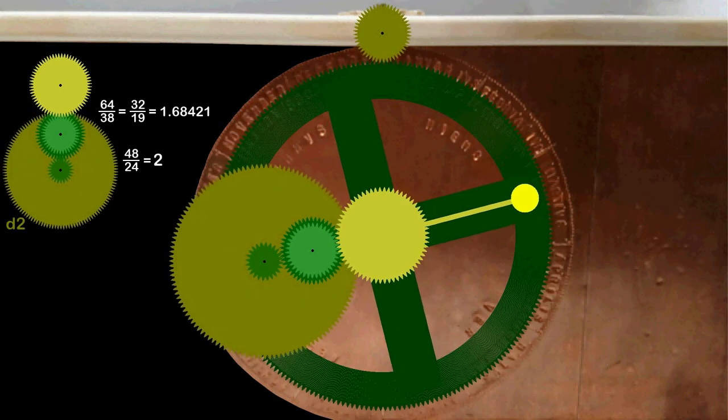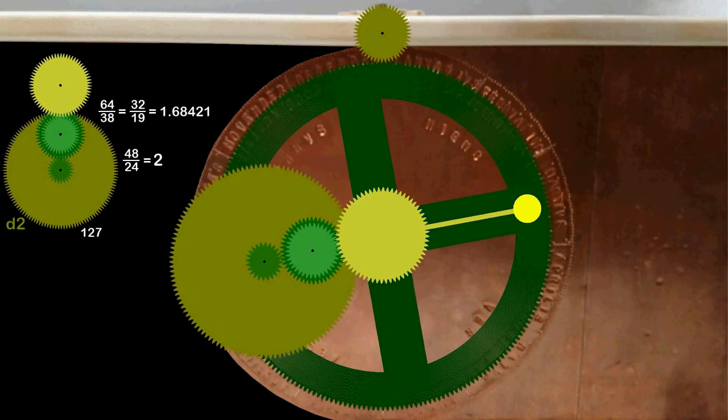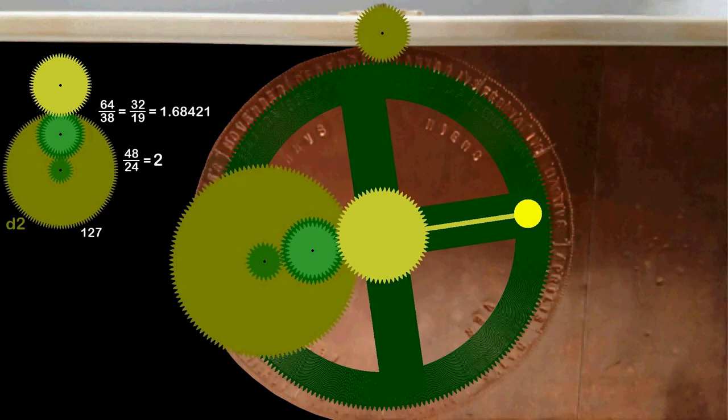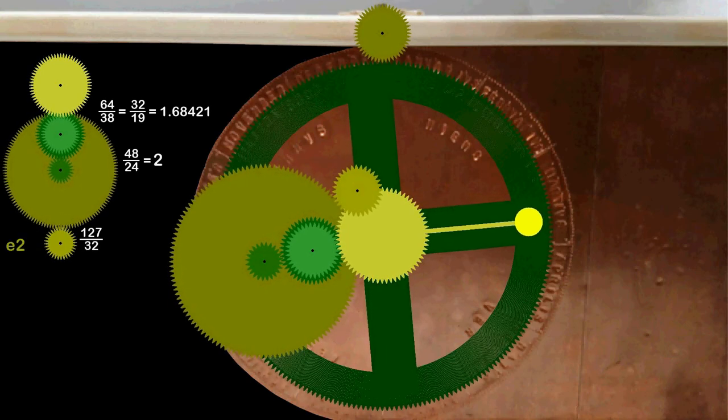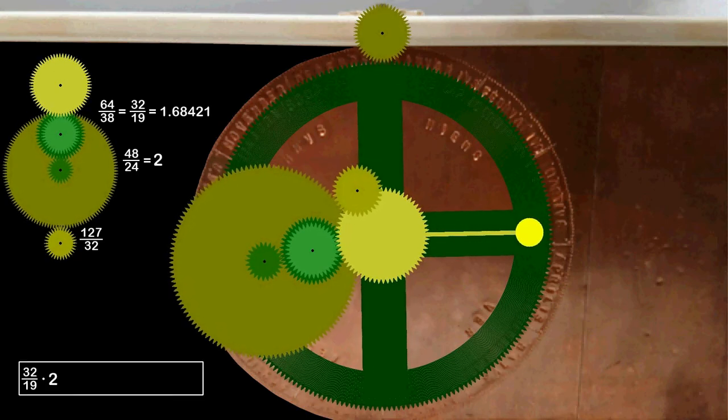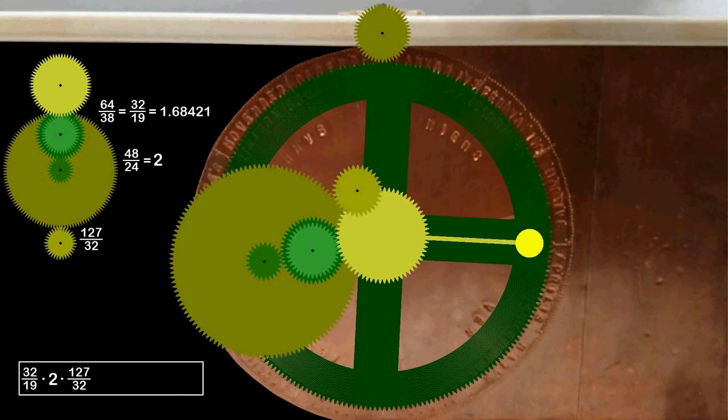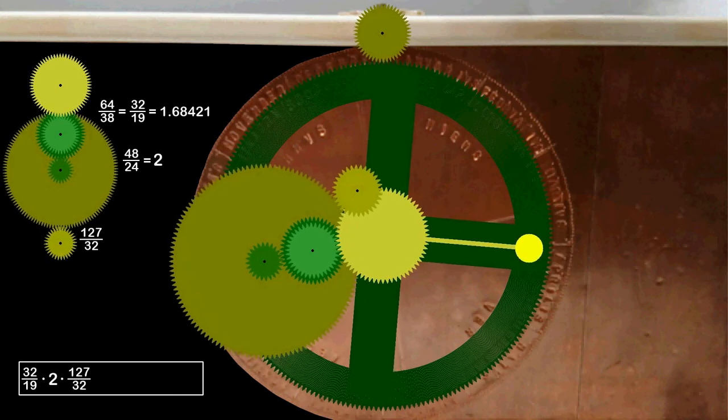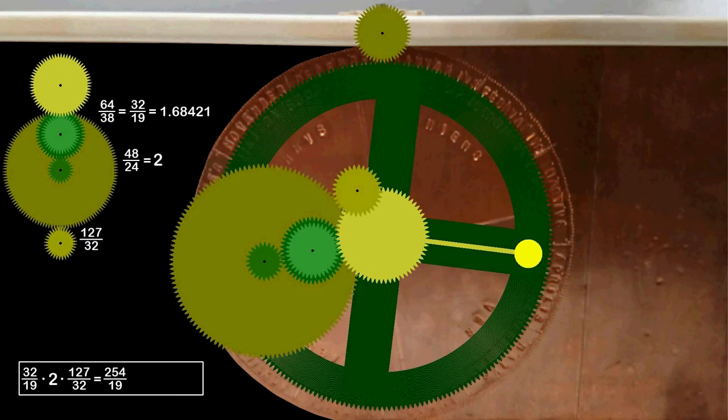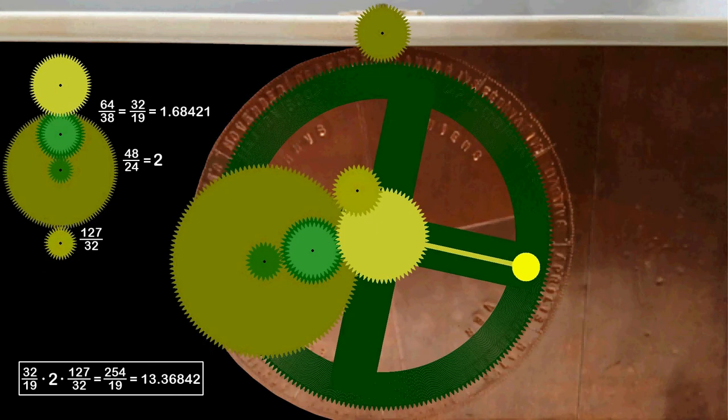C2 meshes with D1 which has 24 teeth. This gives us another doubling of speed. Under gear D1 lies D2 on the same axis. It has 127 teeth. It meshes with the adjacent gear E2 with 32 teeth. 32 divided by 19 multiplied by 2 multiplied by 127 divided by 32 equals to 254 divided by 19 that equals to 13.36842.